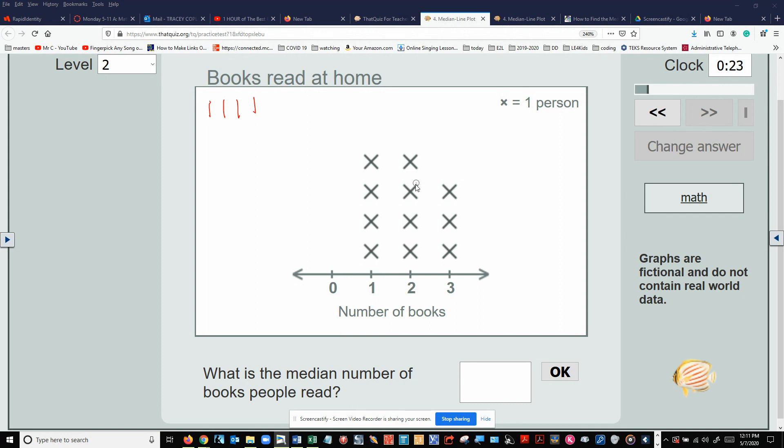We had four people read two. One, two, three, four. And we had three people read three. One, two, three. One, two, three, four, five, six, seven, eight, nine, ten, eleven. There's eleven of them.